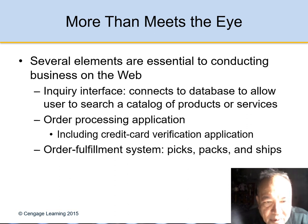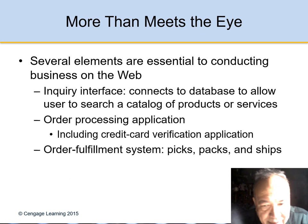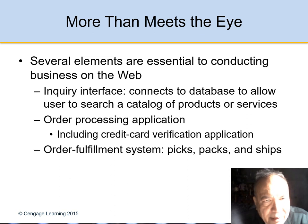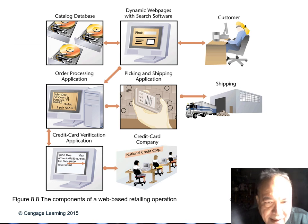Several elements are essential to conducting business on the web. An inquiry interface connects to the database and allows the user to browse a catalog of products and services. There is also the order processing application and the order procurement system. Sometimes you buy something from the internet and it takes a long time — for instance, an item shipping all the way from China.